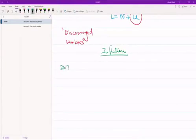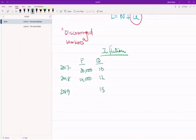So we have 2017, 2018, and 2019. We have price and quantity. So quantity was 10, 12, 13. Price was 20,000, 24,000, and 26,000.